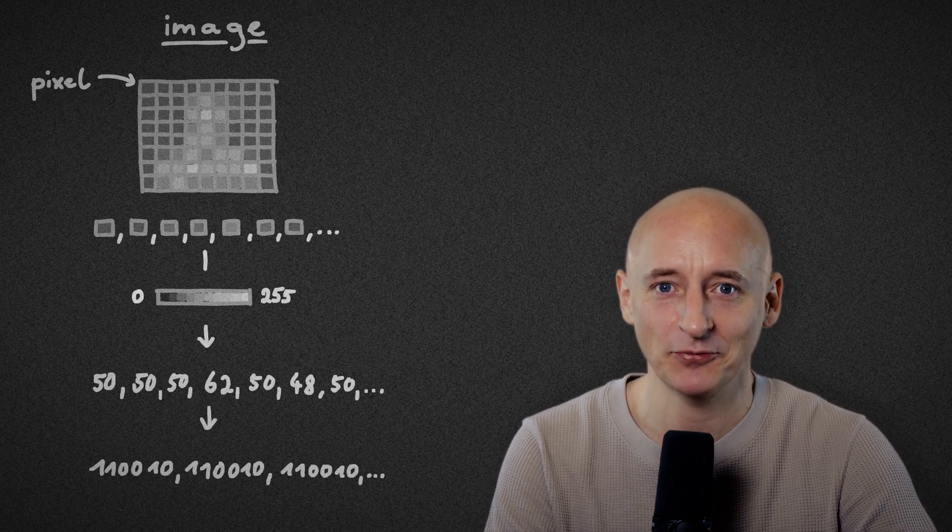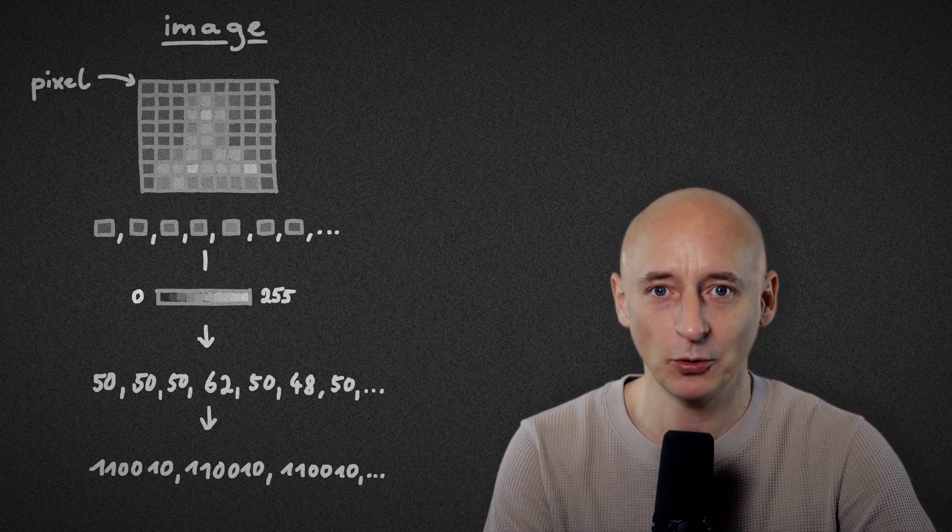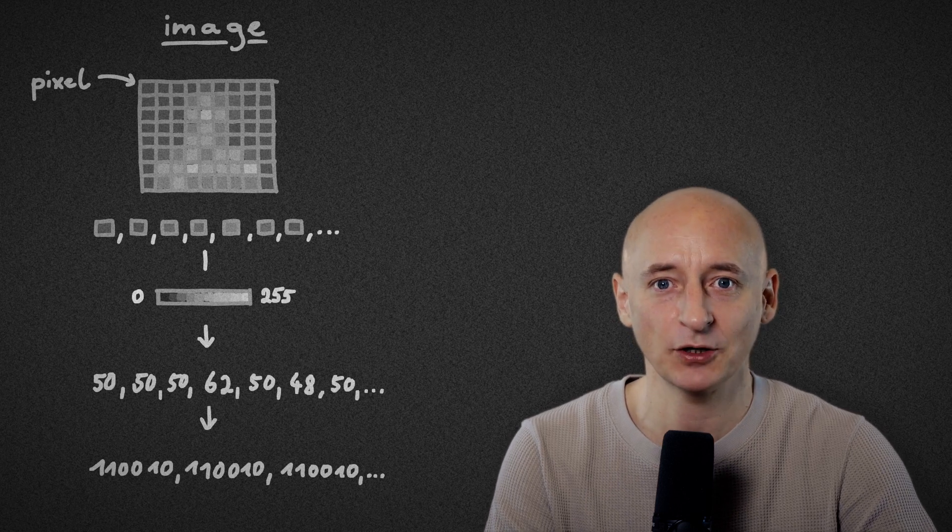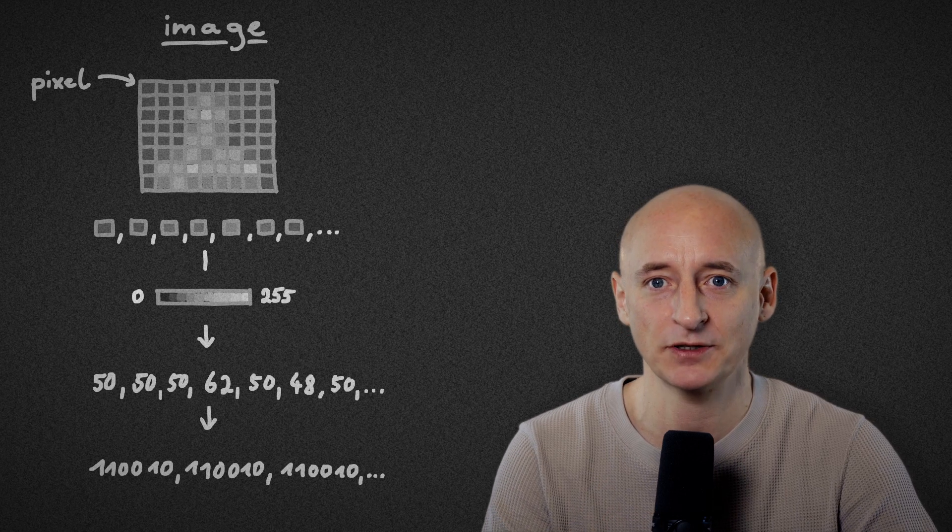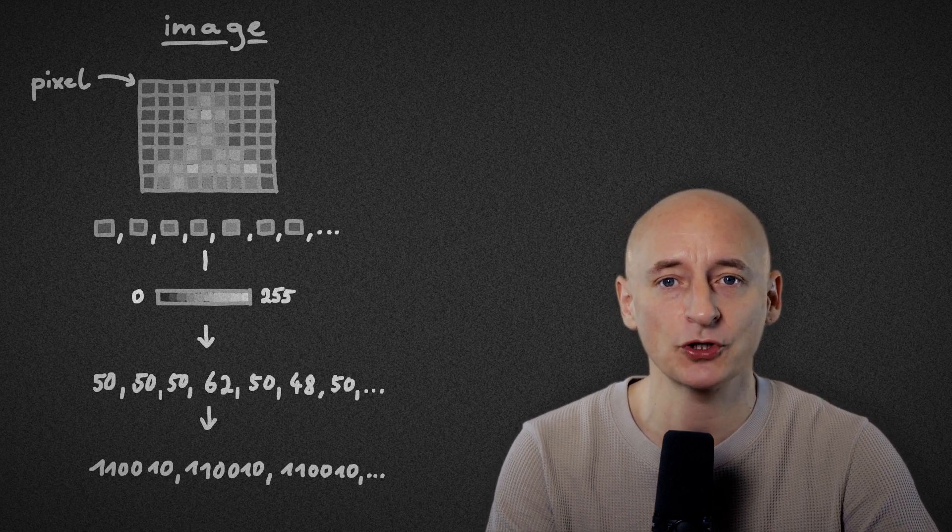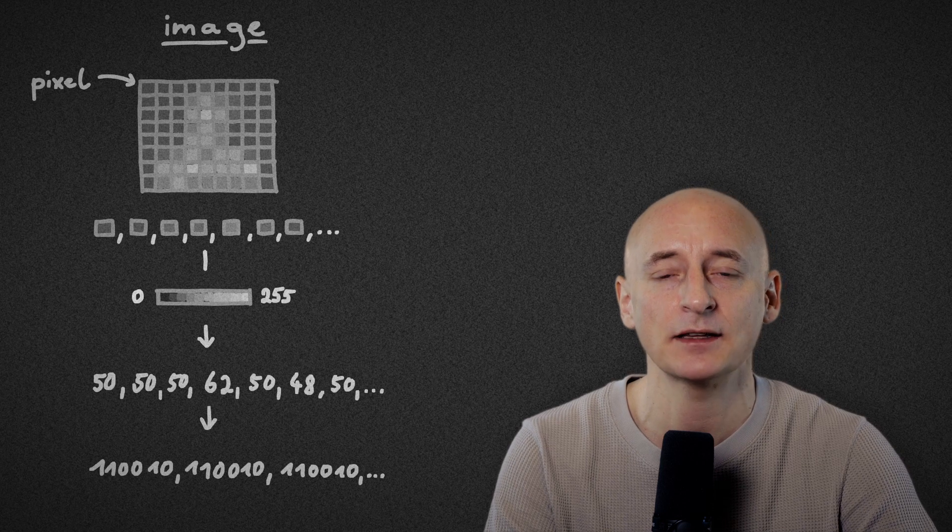Of course, our image here looks a bit rough. If we want an image with a better quality, we have to use a finer grid, which results in more pixels and thus, more numbers. This is why images in a high resolution are usually quite large in file size.